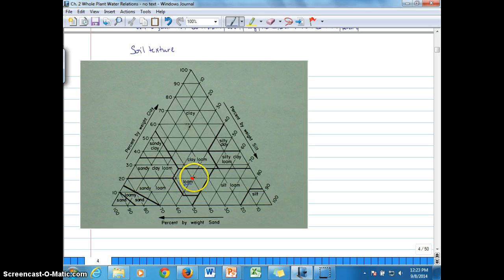Loam is considered to be the ideal soil, equals loam, which is about 40% silt, 40% sand, and 20% clay. So this all has to add up to 100%, basically, for soil texture.